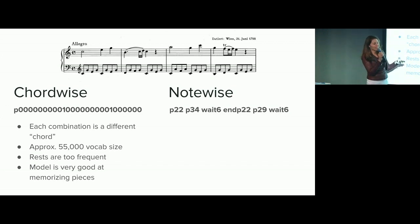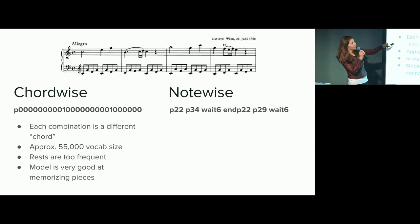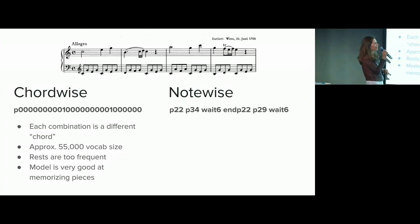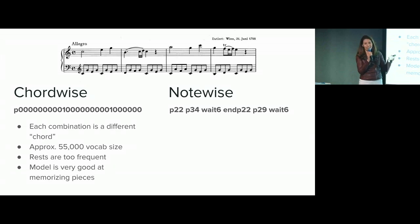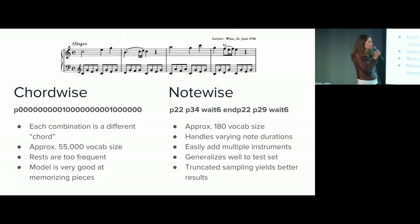So I switched over to the note-wise system, which is a little bit more like modeling character by character in a language modeling task. Here I'm listing: you play a C and a C an octave above it. The 22 and 34 have to do with the MIDI notes I was using. Then you give it a signal to let it know you're done with that time step — wait for the next one, end a certain note, play another note, wait again. That one turned out to be a lot more flexible, had a smaller vocab size, and I was able to generalize it to other instruments. It did a lot better moving from training to the validation set.